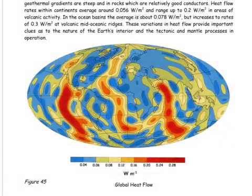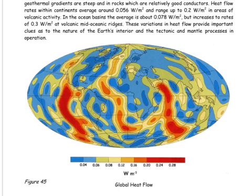The areas of red and orange here, and here, and over here as well, are areas where there's extremely high heat flow. The blue areas are the areas where there's less heat getting to the Earth's surface.